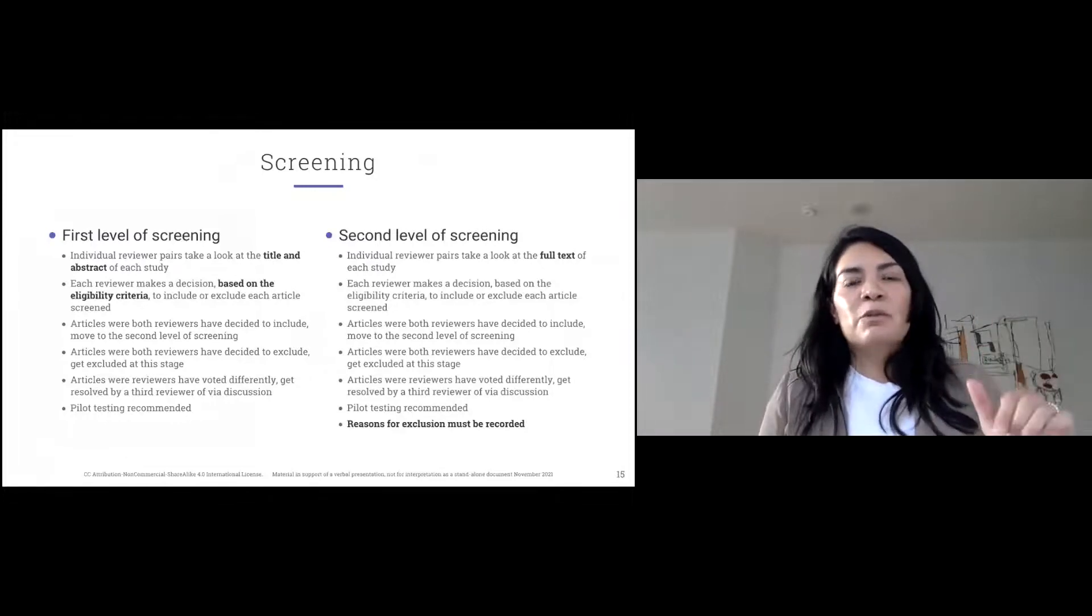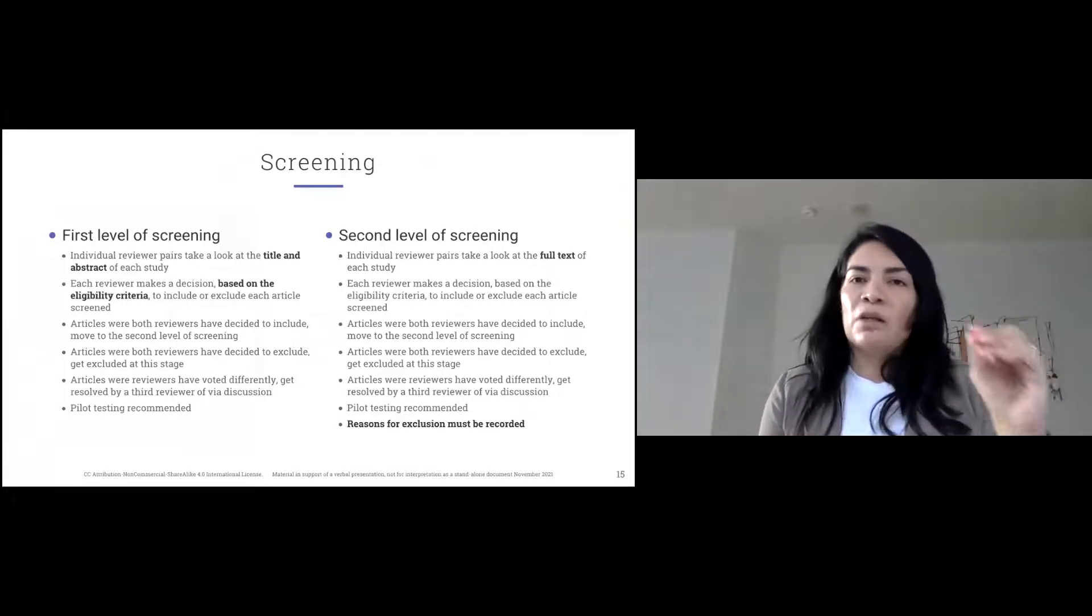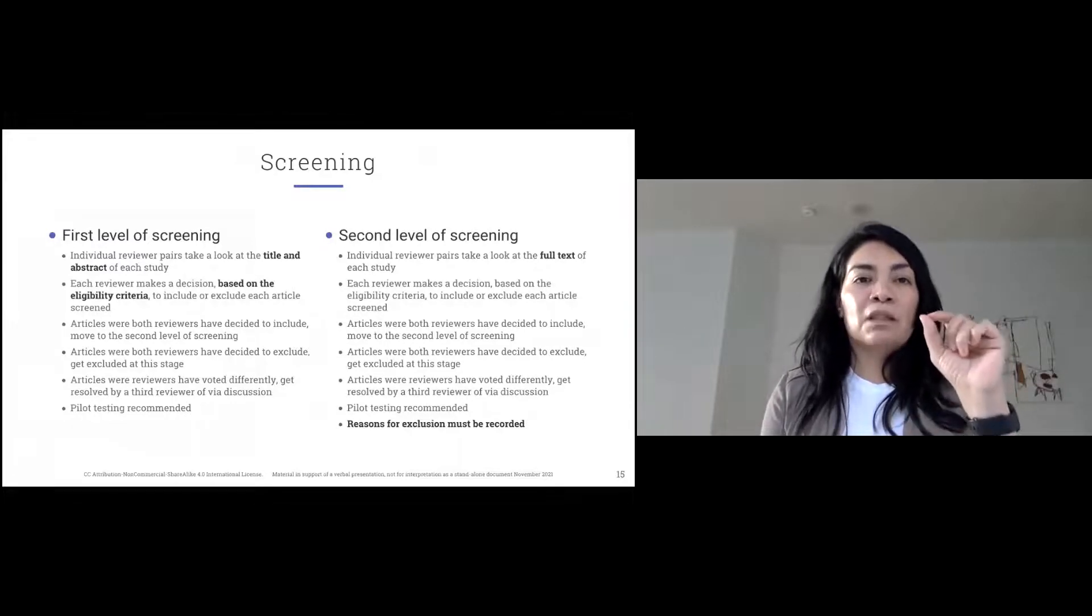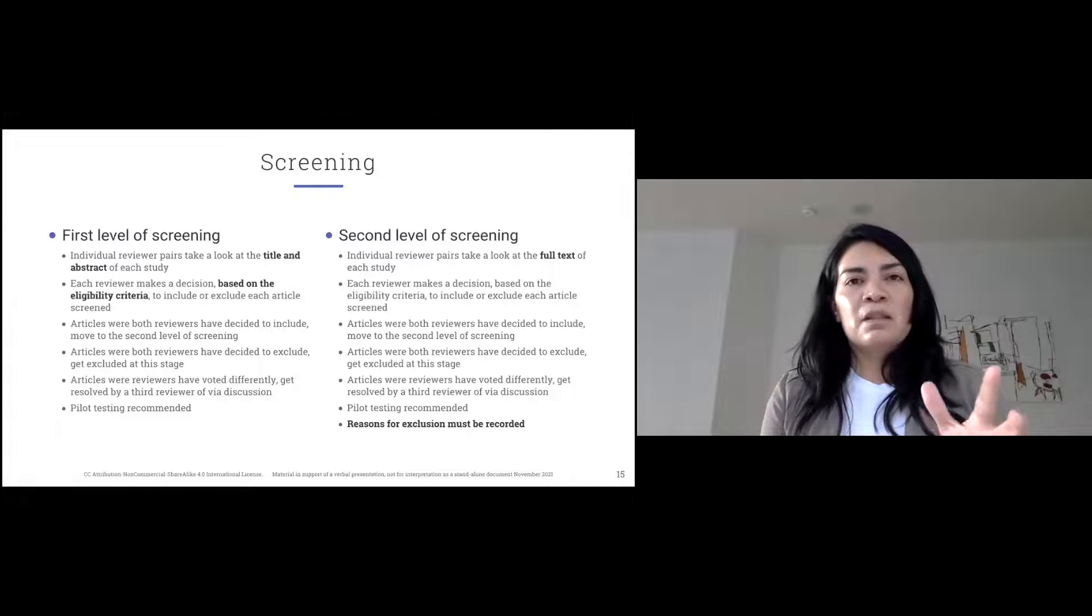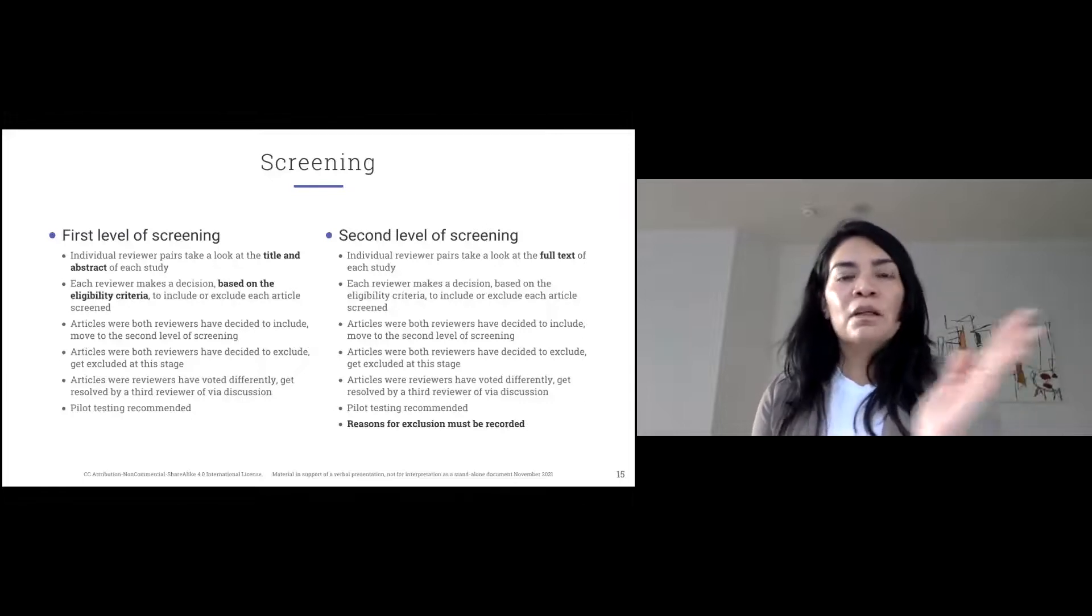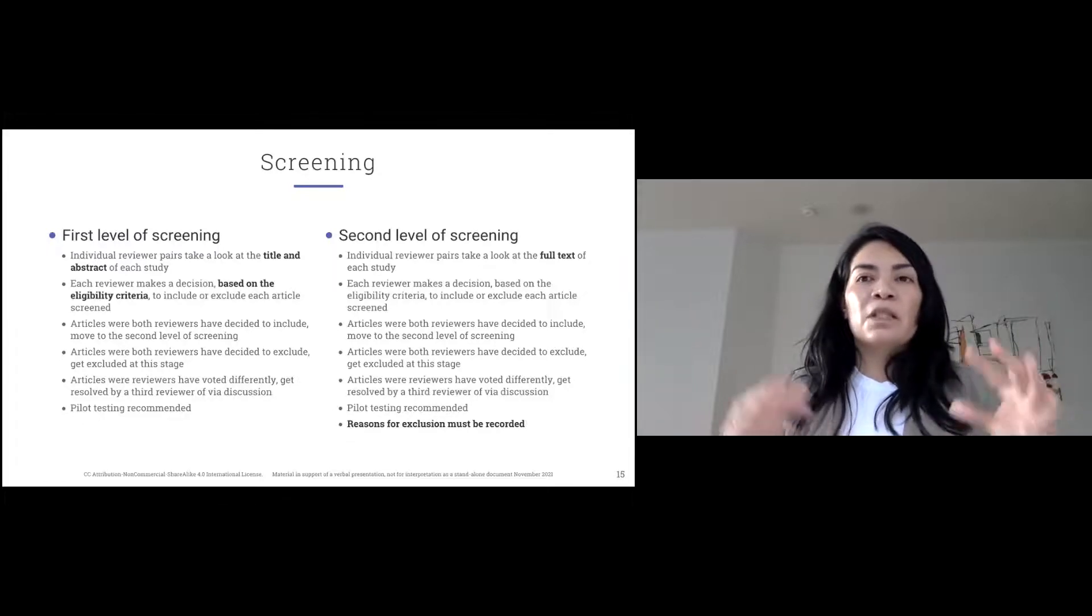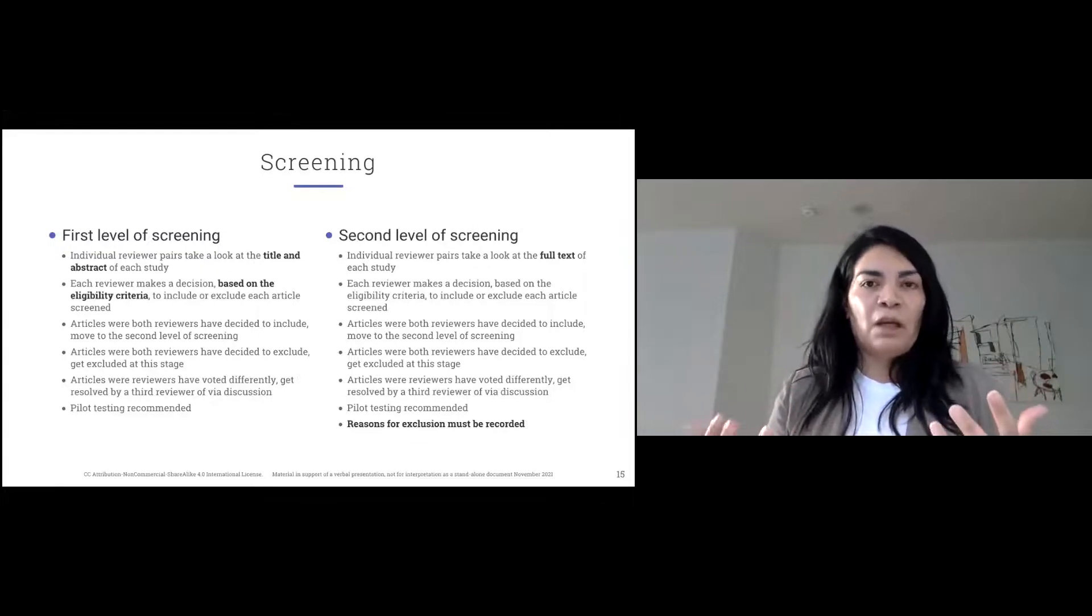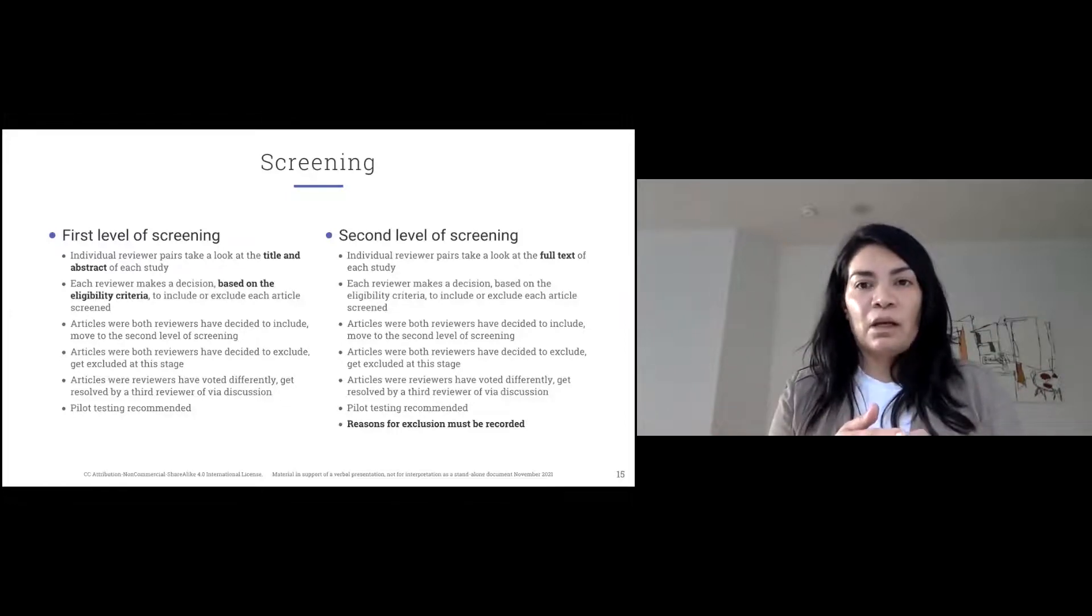The first level of screening really is title and abstract. The first round of screening is you actually just read the title and abstract of each study. And then you make a decision on whether to include or exclude that article. At this stage, the goal is for you to be over-inclusive because you haven't read the full text. If the study makes it through, you go to second level of screening. And it's also done by independent reviewer pairs. And you take a look at the full text. Now you have all the information, and then you can decide, based on your eligibility criteria, whether this is going to make it to data abstraction or not.